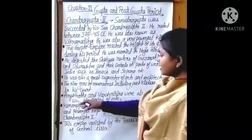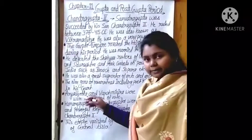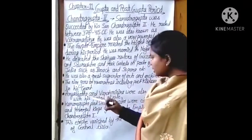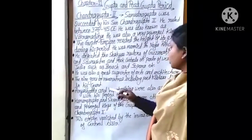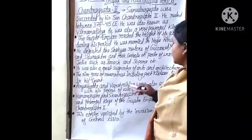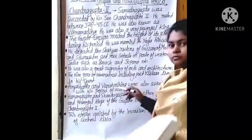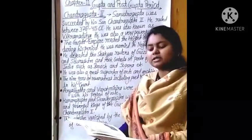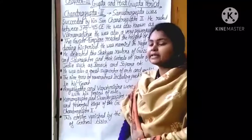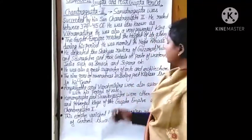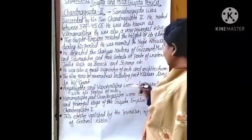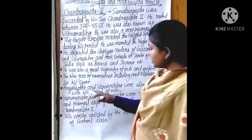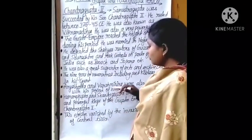Aryabhata was an astronomer, and Varahamihira was a philosopher and a scientist. They were both associated with this period of rule under Chandragupta 2.